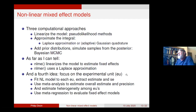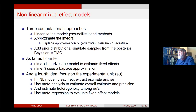A fourth approach focuses on the experimental unit. If plots are the unit of randomization, an experimental unit-based approach fits a nonlinear model to each experimental unit, extracts the estimate and its precision, and then uses meta-analysis to estimate the overall estimate and the precision of that overall estimate, and also estimates the heterogeneity among experimental units. Meta-analysis is usually the term when estimating an overall mean; meta-regression is when estimating a higher-level model relating effects on each individual experimental unit.